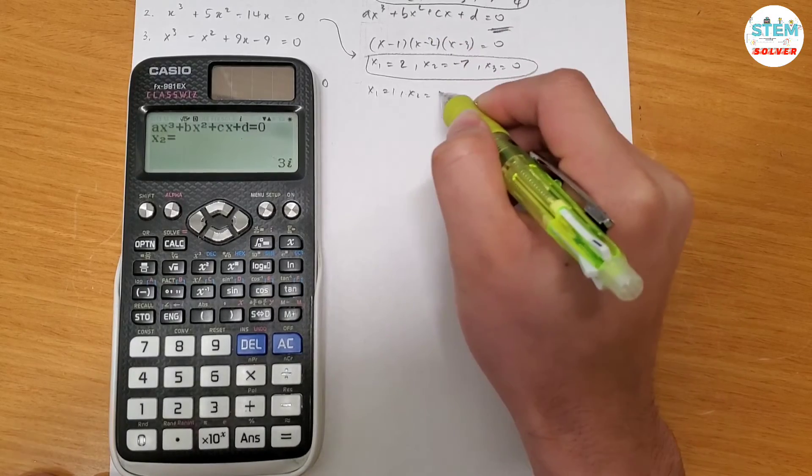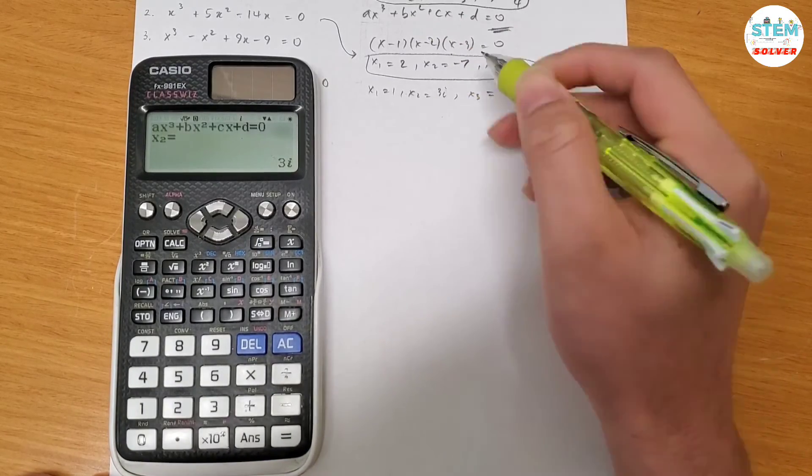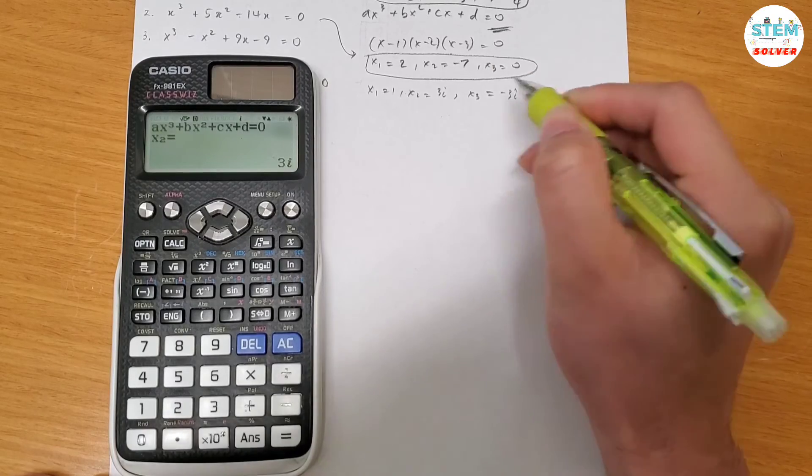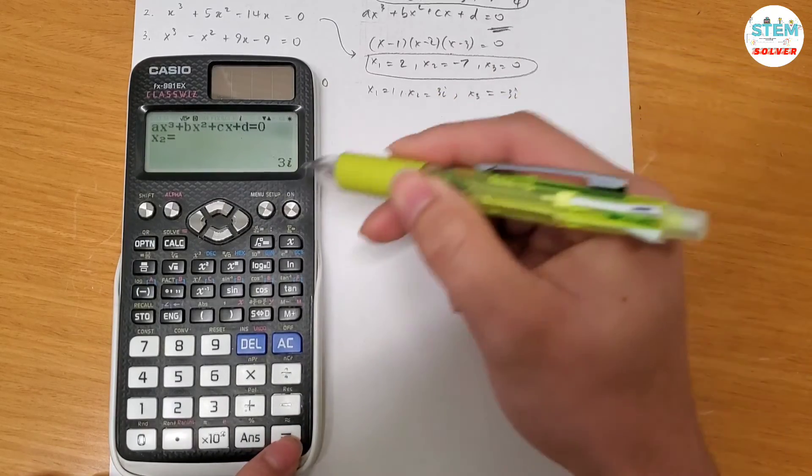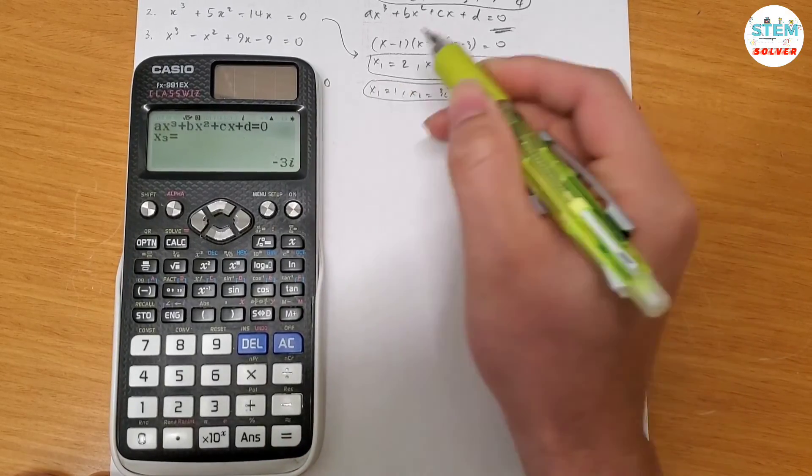Then I expect to get x3 equals negative 3i, because they are conjugate roots. Let's see. x3 equals negative 3i, exactly like I expected.